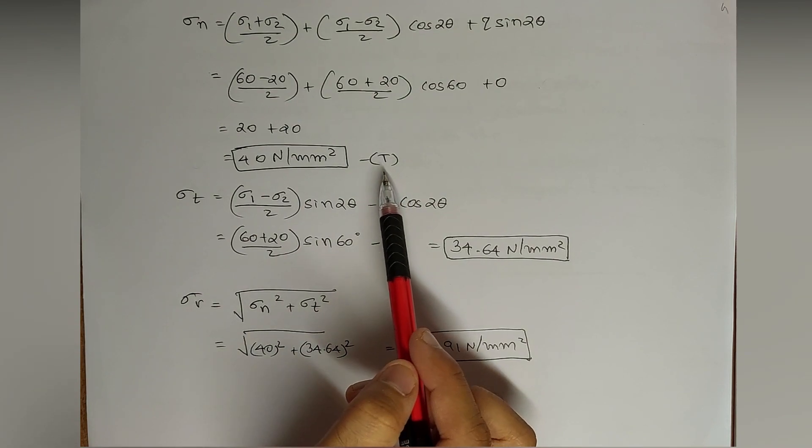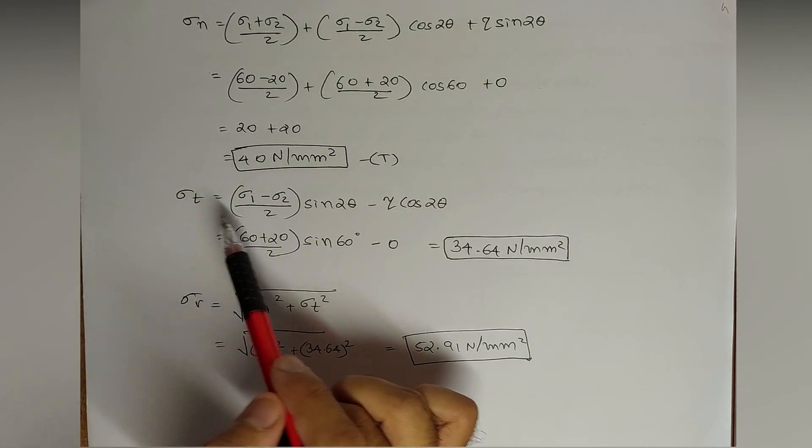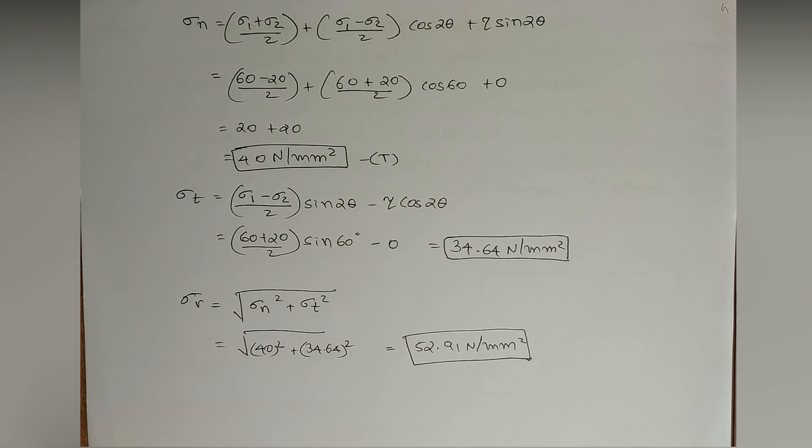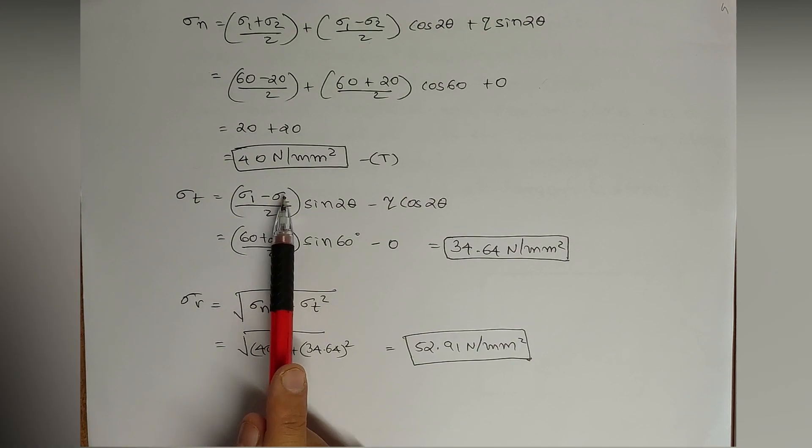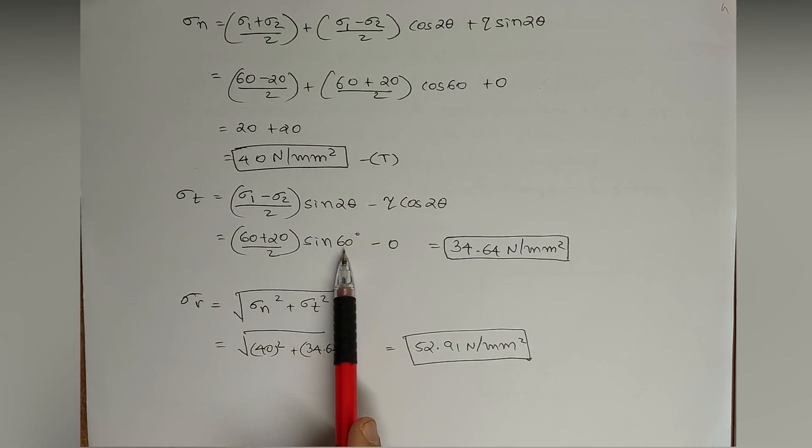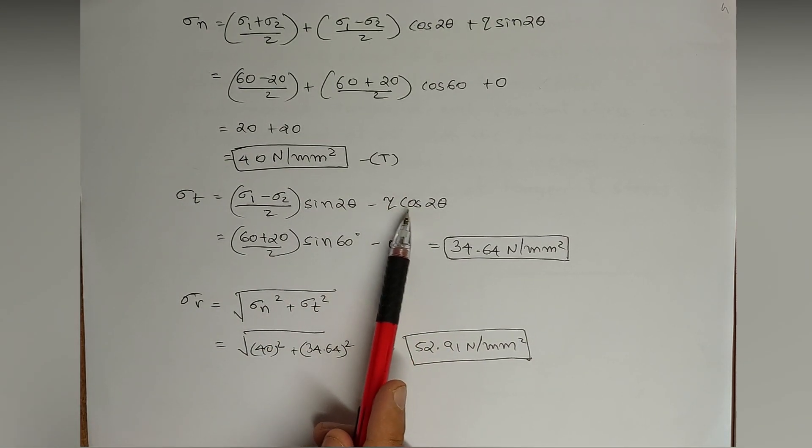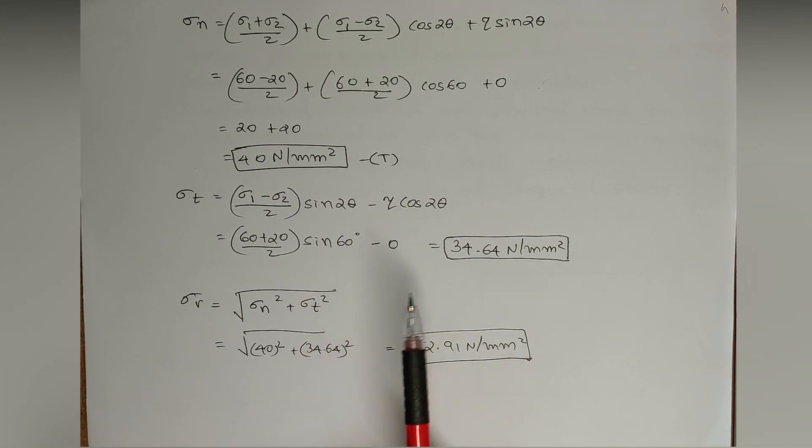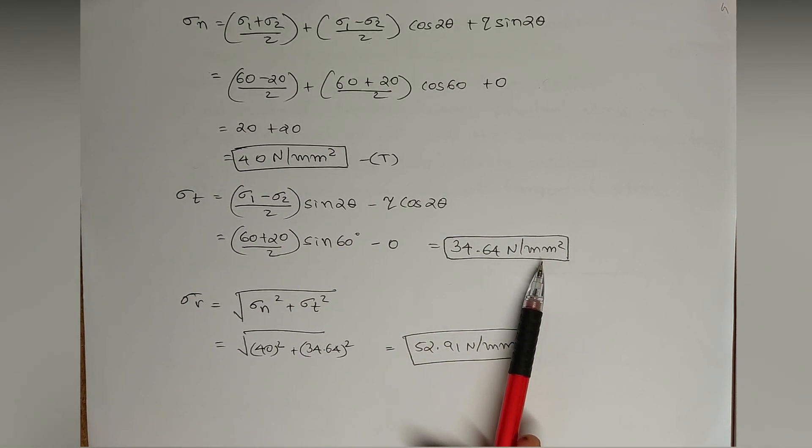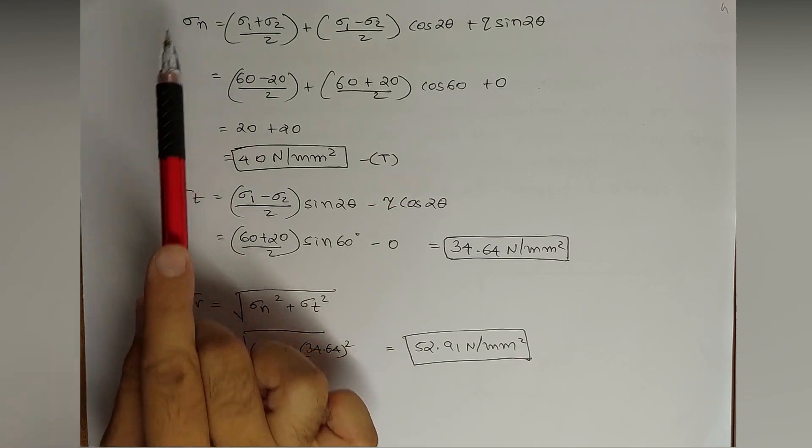It is tensile because positive. Sigma_t, tangential stress, equals 60 plus 20 by 2, sigma 1 minus sigma 2, negative negative here it is positive, sine 60 minus 0. This zero is due to the zero shear stress. The value is 34.64 Newton per mm square. Sigma_n we have acquired, sigma_t we have acquired.